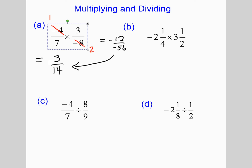For this next example, always start by converting the mixed number to an improper fraction. So 2 times 4 plus 1 is 9, and it just happens to be negative, so we put that negative on top to make it easier: negative 9 over 4. Then 3 times 2 plus 1 is 7 over 2. We check if there's anything to cancel — in this case there is not. A negative times a positive gives negative 63 over 8. Leave your answer as an improper fraction as long as it is simplified.